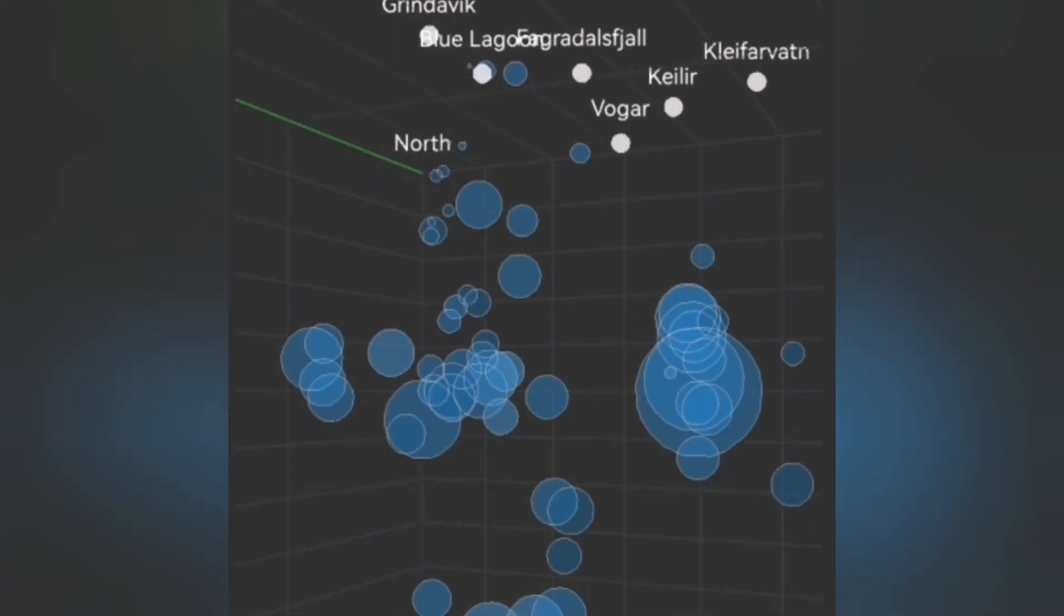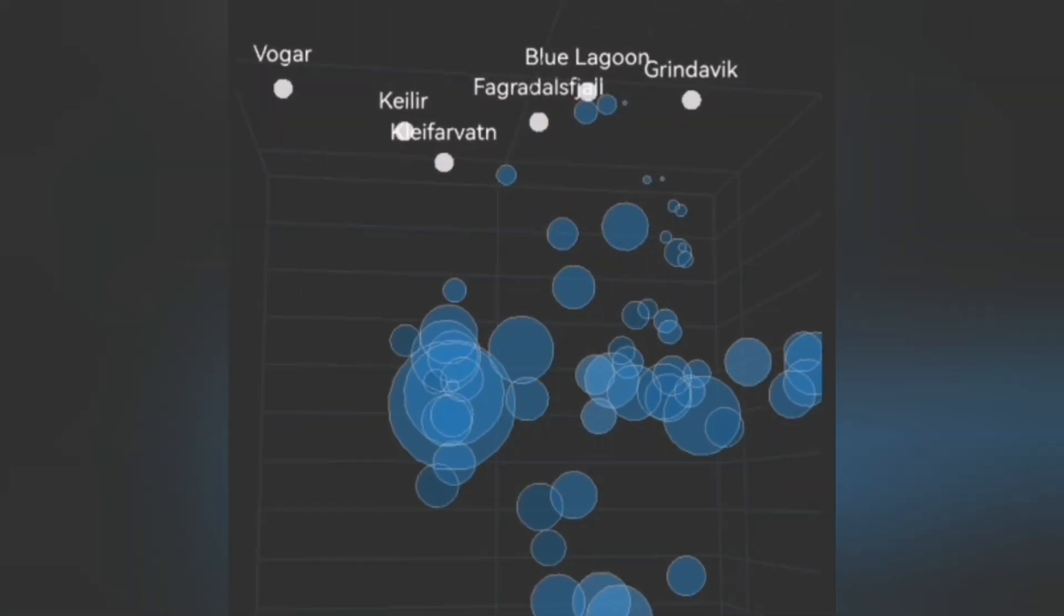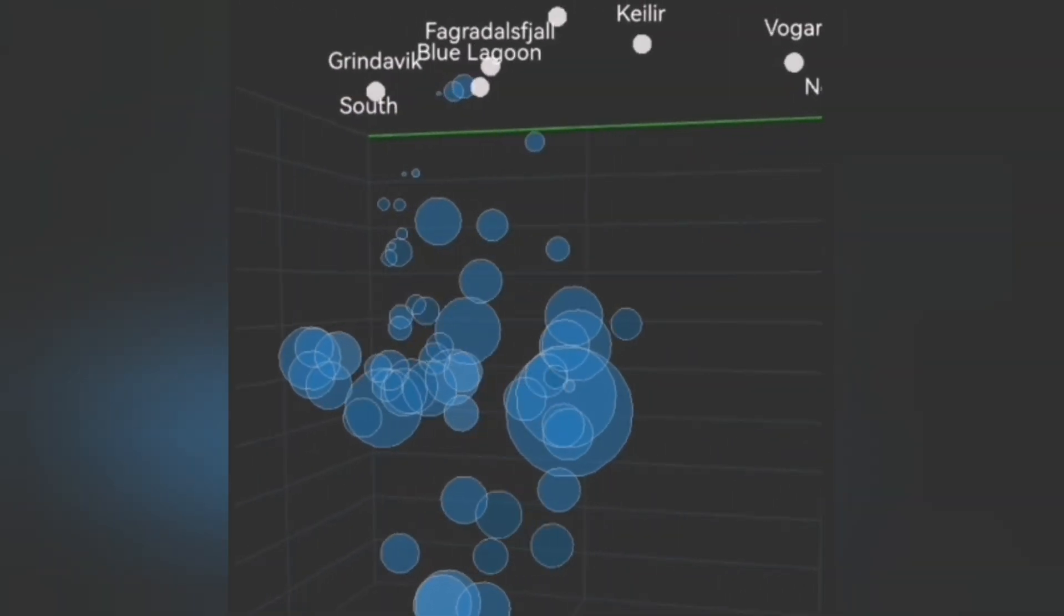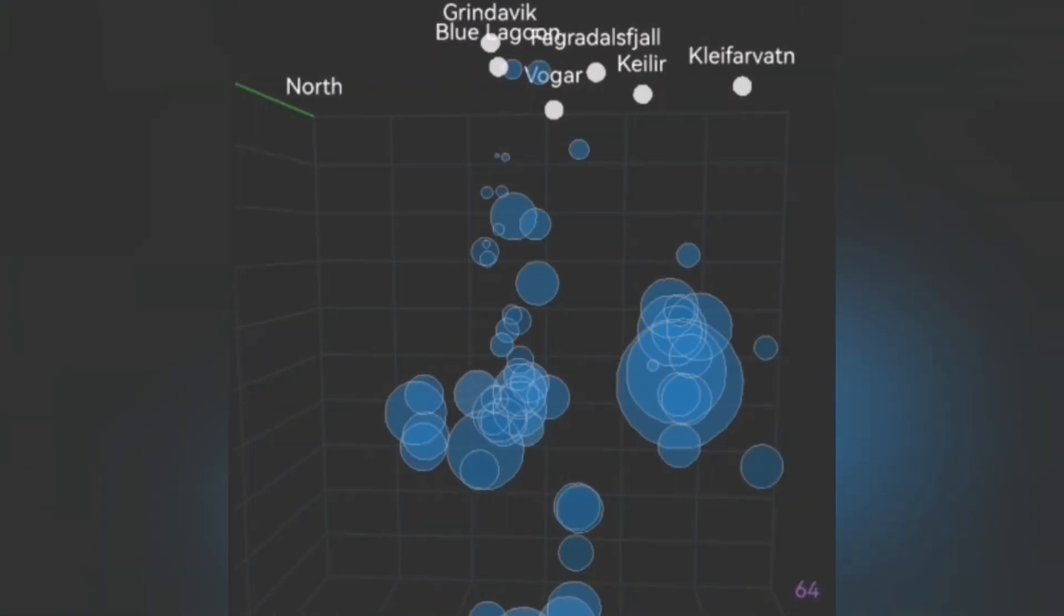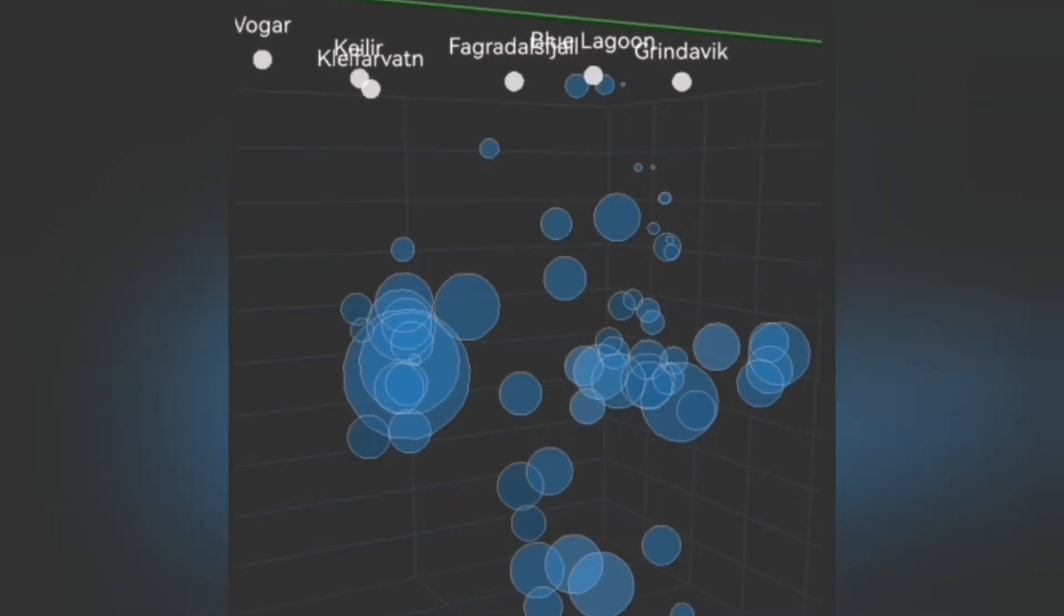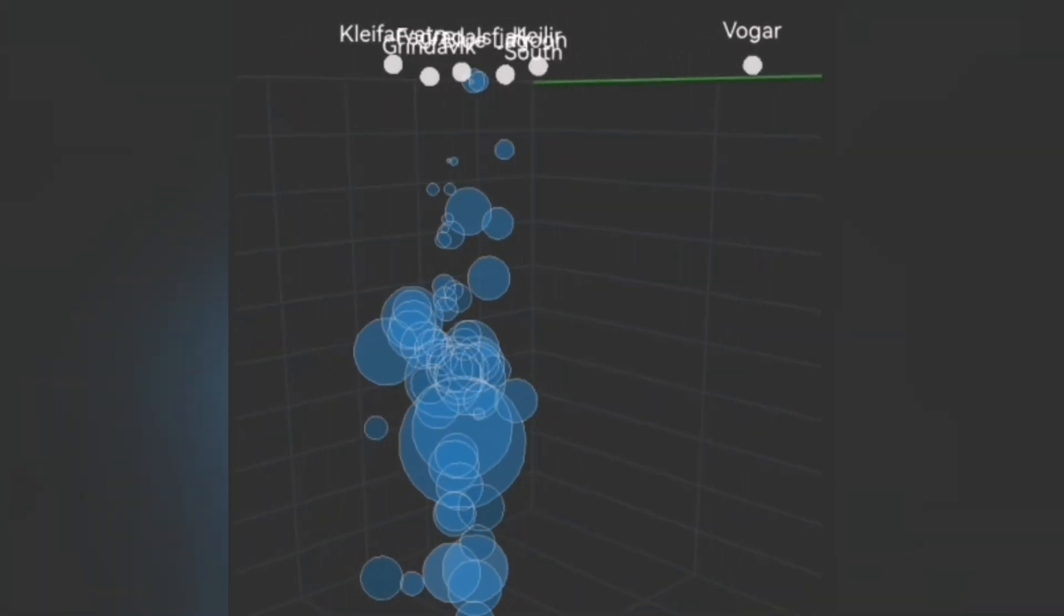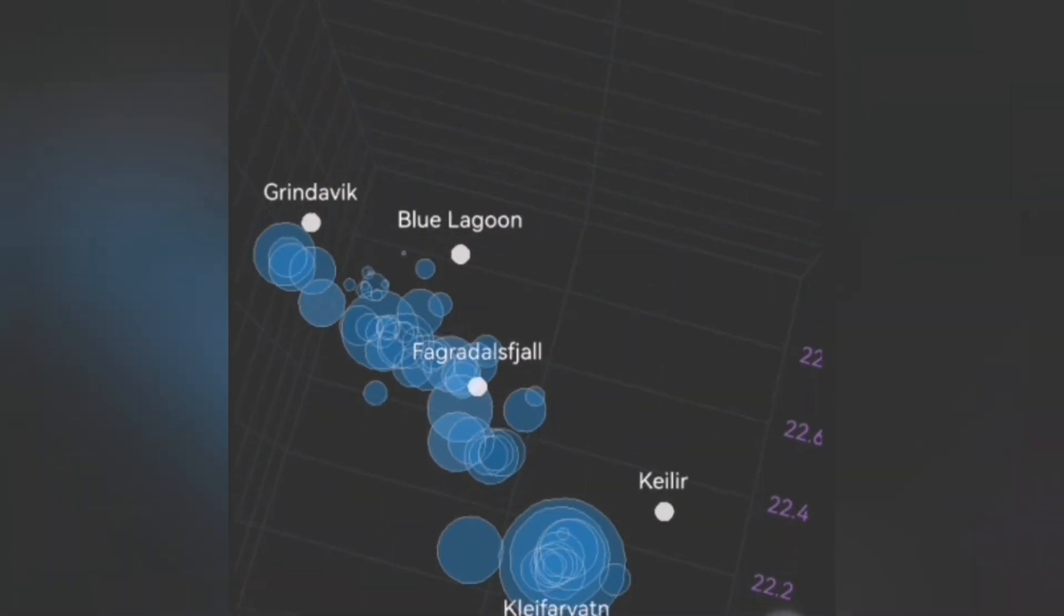Up to now, what we had at the depth of 5 km was the fault lines transferring the movement from the Swartzengi toward the east. And that was the reason we had earthquakes at the Krýsuvík and Kleifarvatn area.